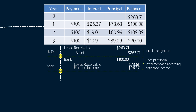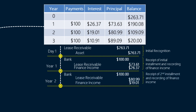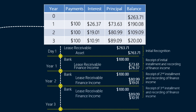We can repeat the same entries for the second and the third year. Except in the last year, even after making these entries, our lease receivables account will have a balance of $20. As we receive our supersonic plane back, we debit that asset onto our balance sheet and credit the receivables by $20, which will eliminate the receivables completely. So that was the lessor's subsequent measurement of a finance lease.